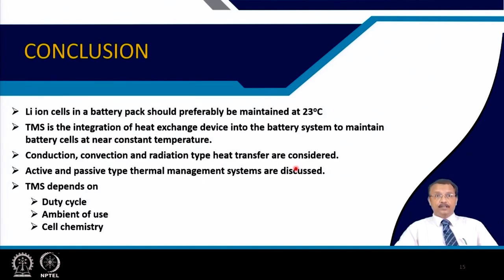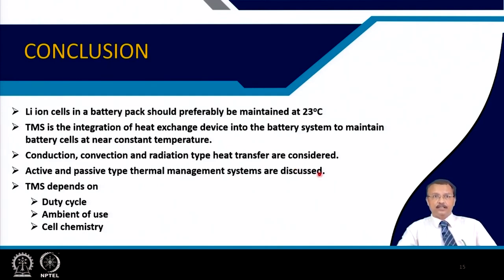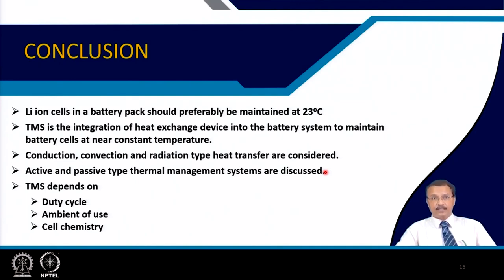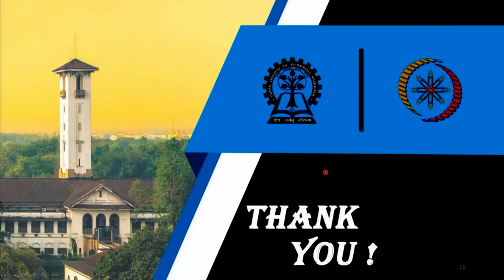In this lecture we talked about: lithium-ion cells in a battery pack should preferably be maintained at around room temperature, 23 degrees Celsius. Thermal management system is the integration of heat exchange devices into the battery system to maintain battery cells at near-constant temperature. Conduction, convection, and radiation type heat transfers are all considered. Active and passive thermal management systems have been discussed. The thermal management system depends on the duty cycle, the ambient where the battery is kept, and the cell chemistry. Thank you for your attention.